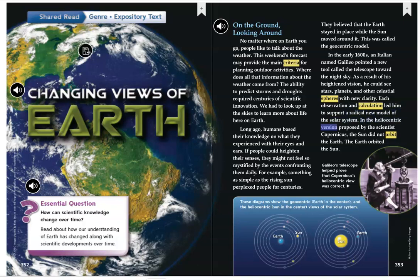In the heliocentric version proposed by the scientist Copernicus, the sun did not orbit the Earth. The Earth orbited the sun. These diagrams show the geocentric, Earth in the center, and the heliocentric, sun in the center, views of the solar system. Galileo's telescope helped prove that Copernicus' heliocentric view was correct.